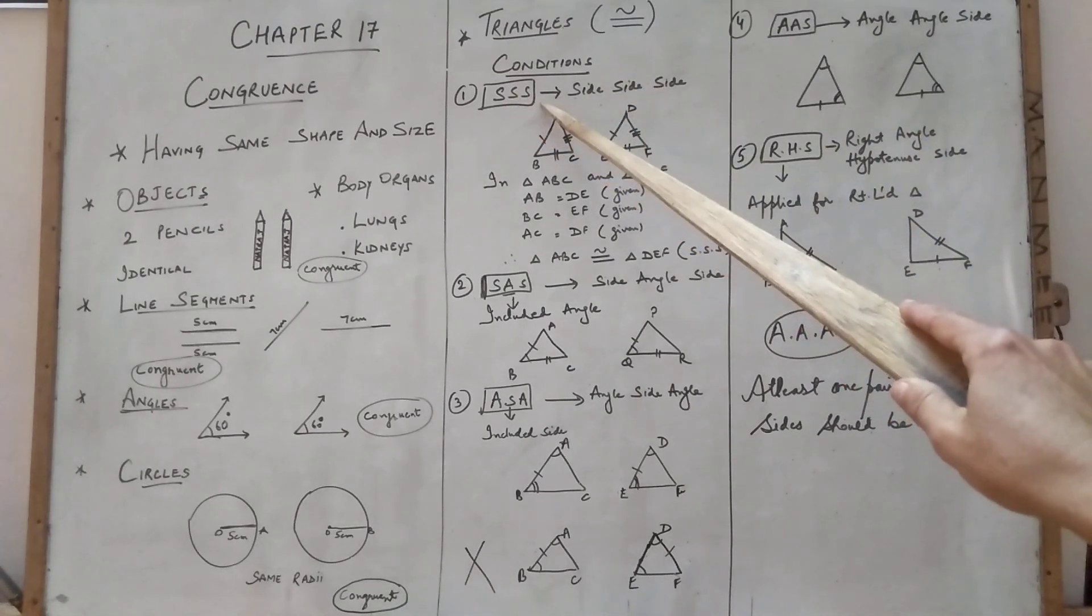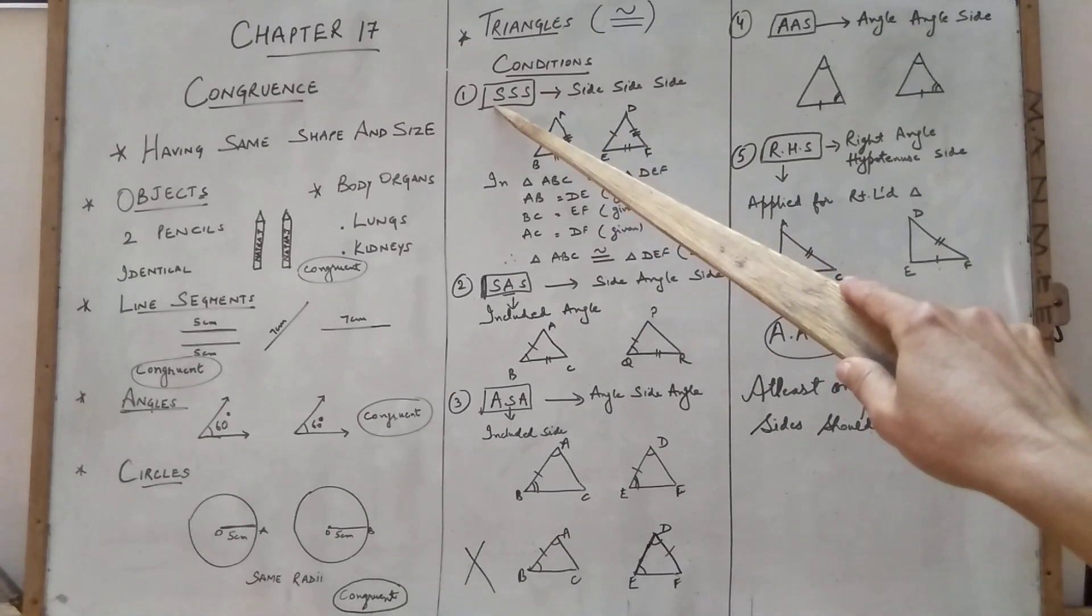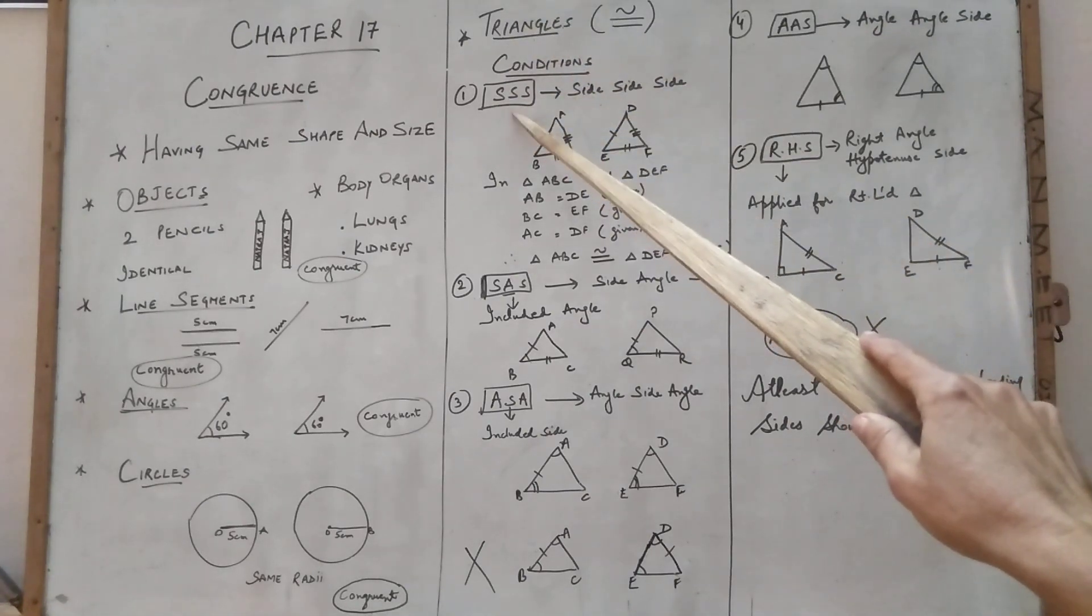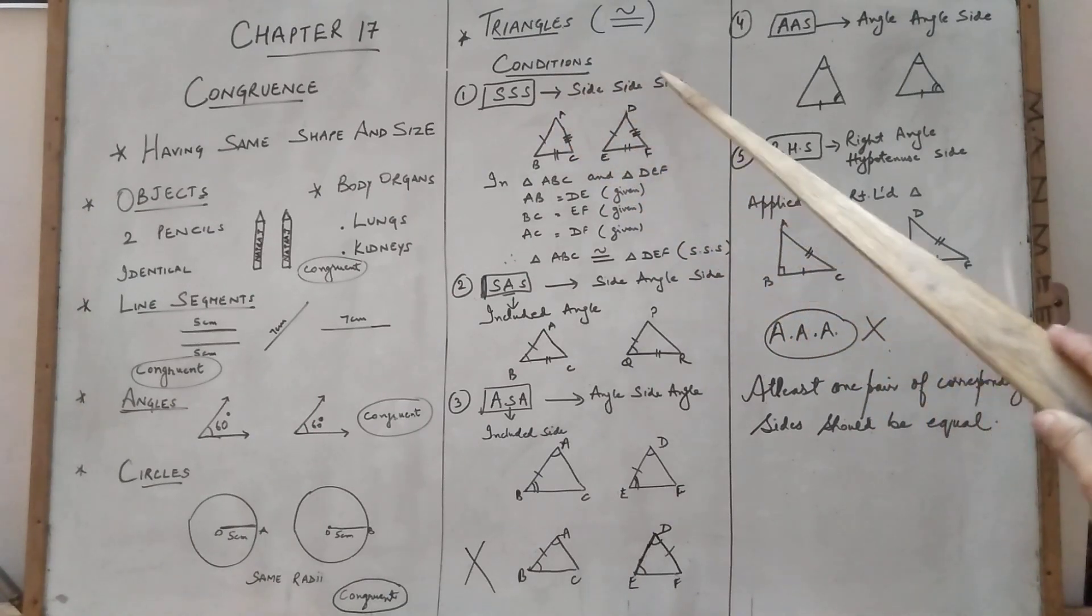So SSS. Here S is denoted for side, A is denoted for angle. SSS means side, side, side.